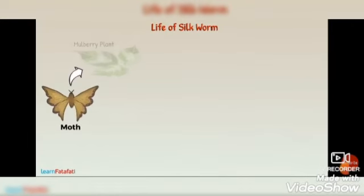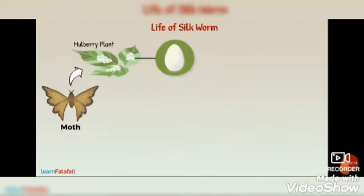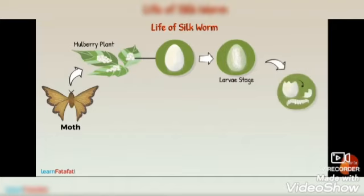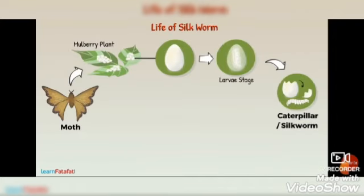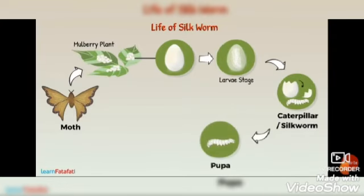Let's understand the life cycle of the silkworm and how the cocoon is formed. The female silk moth lays hundreds of eggs at a time. When the young organism growing in the egg reaches the larva stage, it comes out of the egg. The organism is then known as a caterpillar, or also called a silkworm. The silkworm feeds on leaves of the mulberry plant. When it grows and is ready to enter the next stage of the life cycle called pupa, it starts weaving a net around itself, forming the shape of an eight.